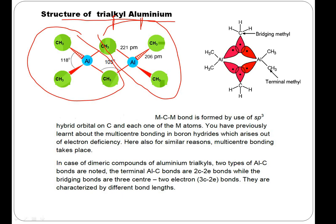In this dimer, we have two types of methyl groups. Some methyl groups are at terminal positions — these terminal Al–CH3 bonds are normal classical two-center two-electron bonds. Then we have bridging methyl groups positioned between the two aluminum atoms. These Al–CH3–Al bonds are called MCM bonds (metal–carbon–metal bonds), and this is a three-center two-electron bond.